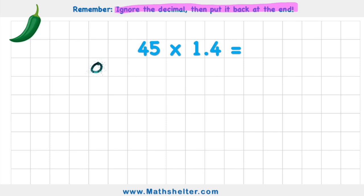Let's begin by putting our columns — we're going to have ones and tens. My 45 is made up of five ones and four tens. And my 1.4 — remember we're going to think of it as just 14 — so I have four ones and one ten. Now I'm just going to solve this like any other multiplication question, starting with my smallest value.